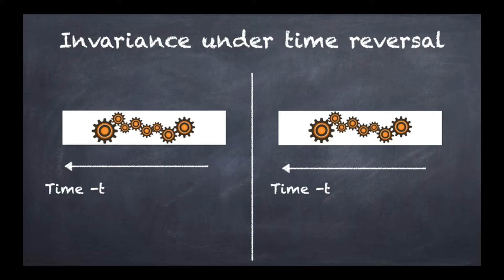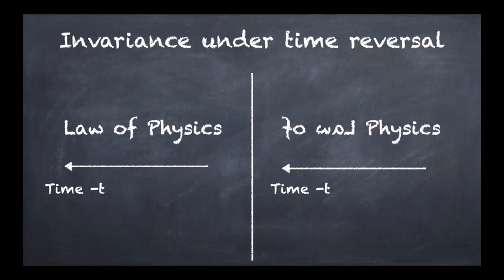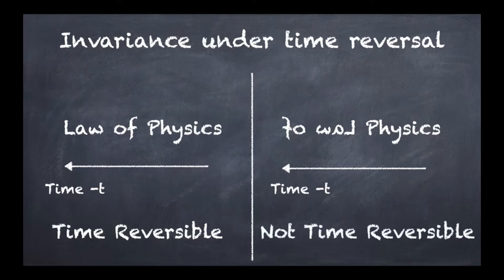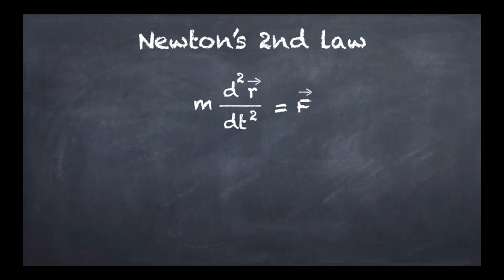Mathematically, it essentially changes the time t into a new time called minus t, which is literally −1 times t, and obviously minus t is going in the opposite direction to t. Once we have operated this transformation on the equation, we check what the equations look like. If the law of physics is still the very same that you started with, then it is said to be time reversible. If it is not the same, then it is called not time reversible. So that's how this works, and what I want to evaluate in this video is basically how Newton's second law actually fares against this time reversal transformation.